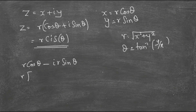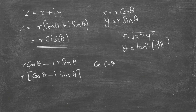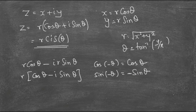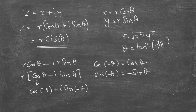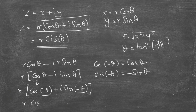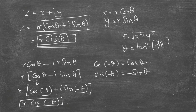What happens to the conjugate? The conjugate is r·cos θ − i·r·sin θ. Taking r out, we deal with cos θ − i·sin θ. Since cos(−θ) = cos θ and sin(−θ) = −sin θ, we can write this as cos(−θ) + i·sin(−θ), which is of the form cis(−θ). Therefore, r·cis(−θ) is the conjugate of r·cis θ. Remember this — you may need it when adding, subtracting, or multiplying complex numbers.